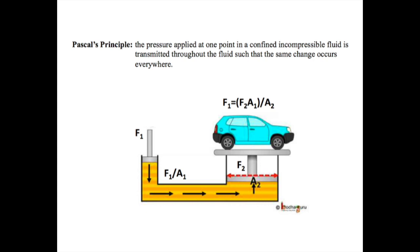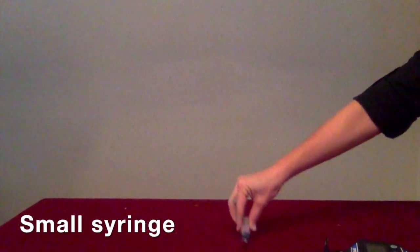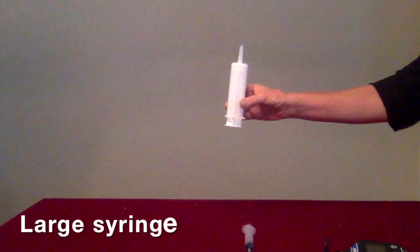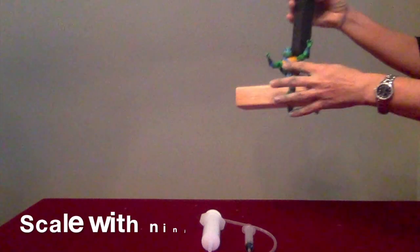We built a small scale hydraulic lift using the following household items: a small syringe, a large syringe, tubing, and a scale to weigh the objects.